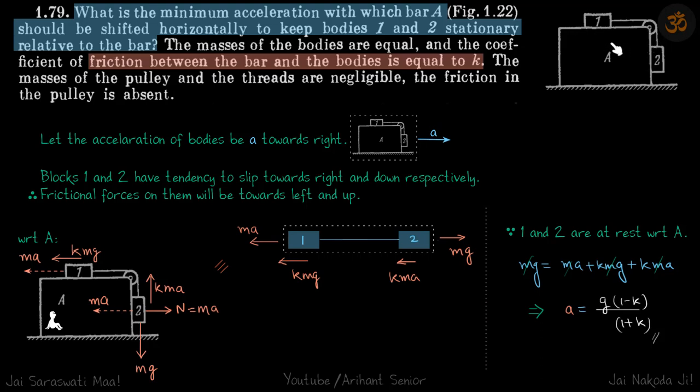And because we need to find the minimum acceleration to just keep them in their positions, that means the friction is at its maximum value. Because at any acceleration less than what we are going to calculate, the blocks are anyway sliding, and if they are sliding the friction is anyway maximum. So if they just stop sliding, then also friction is maximum.